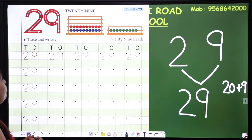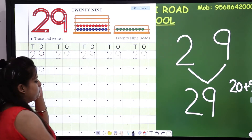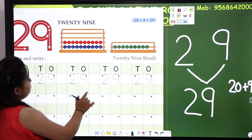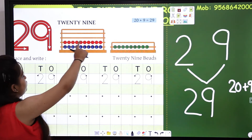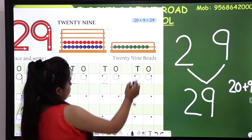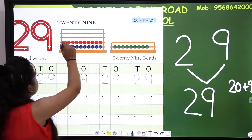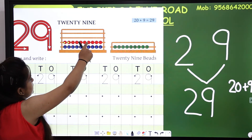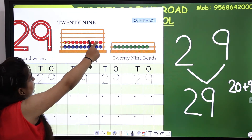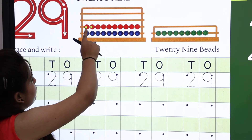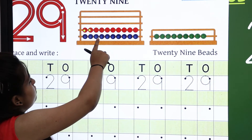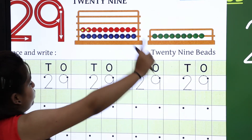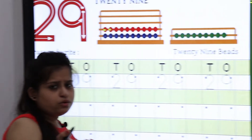Now we will check the formation. First of all, count those beads. We will count the red ones: 1, 2, 3, 4, 5, 6, 7, 8, 9, 10. Then blue: 11, 12, 13, 14, 15, 16, 17, 18, 19, 20. How many beads are the total? 20.